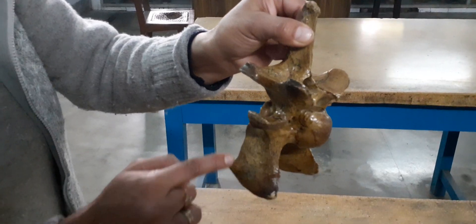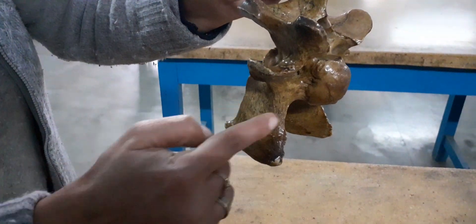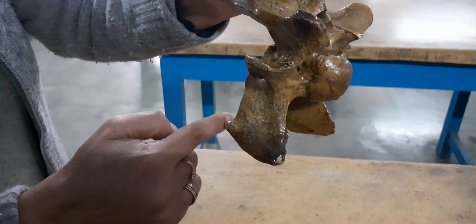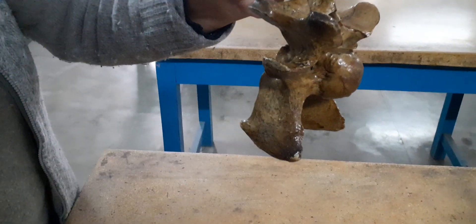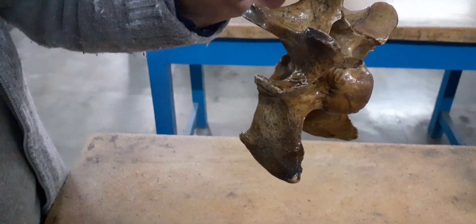The peculiar thing in the 6th is this lower transverse process branch. It is somewhat plate-like, directed downward. It is a broad plate-like structure that is the peculiar characteristic of the 6th cervical vertebra.